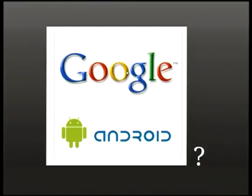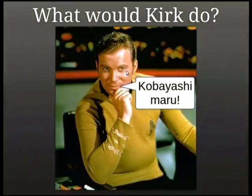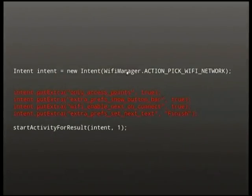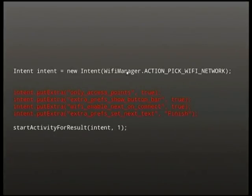I always think: what would Kirk do in a situation where I need to do something but it seemingly can't be done? You change the rules of the game — if something's impossible, you change the game so it's no longer impossible. Luckily, because Android is open source — the code is sitting on git repositories ready for us to grab and read — when you look at the source code covering the Wi-Fi configuration, you find something interesting.